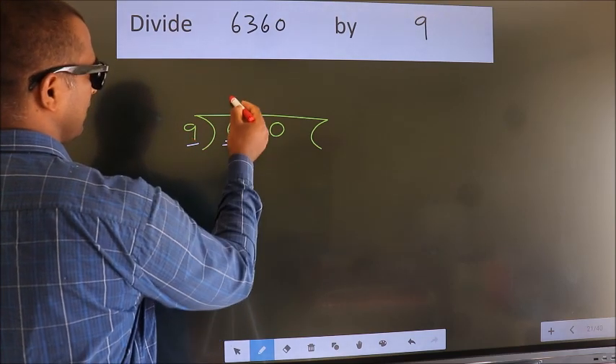Next, here we have 6. Here 9. 6 smaller than 9, so we should take 2 numbers: 63. When do we get 63? In 9 table. 9 7s, 63.